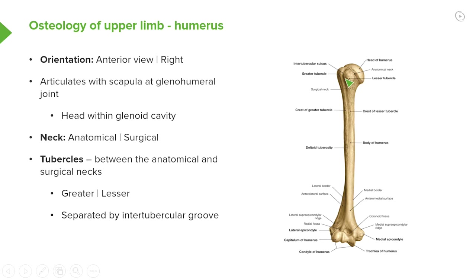Let's concentrate on the tubercles. We have the greater and the lesser tubercles, which are important sites for muscle attachment — notably, the rotator cuff muscles attach to both. These two tubercles are separated by a groove known as the intertubercular sulcus or intertubercular groove. Various muscles attach in this groove, and it also contains the tendon of the long head of biceps brachii, running up in this direction.